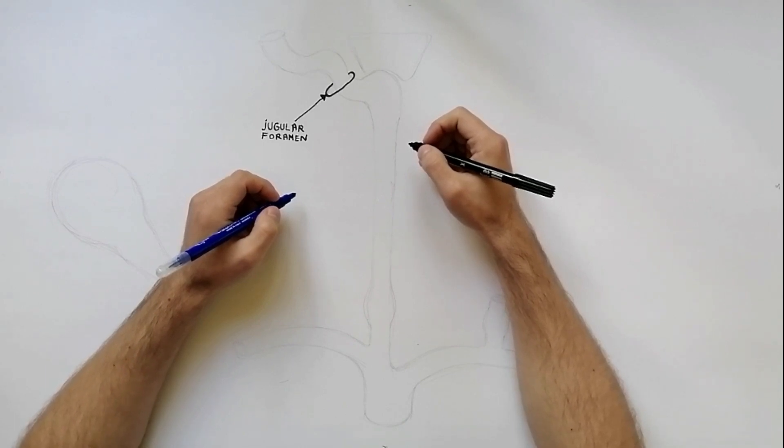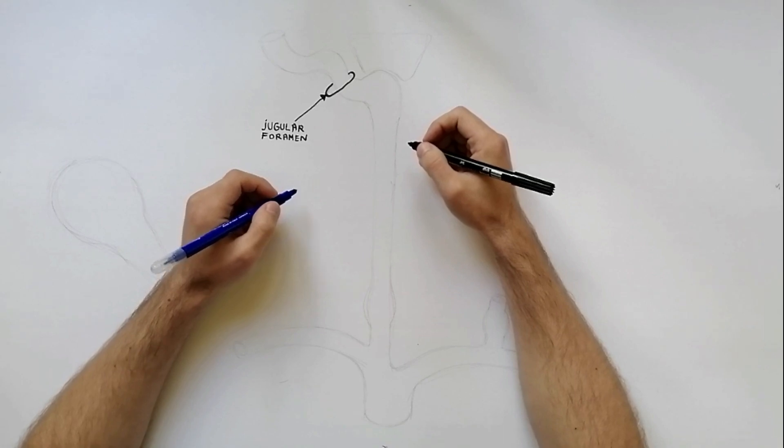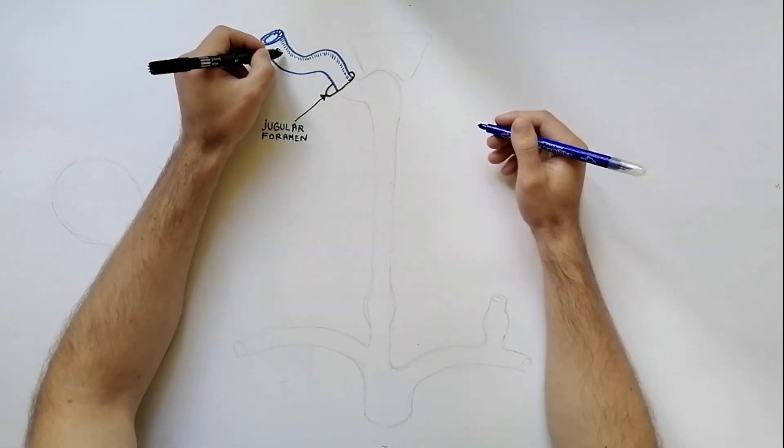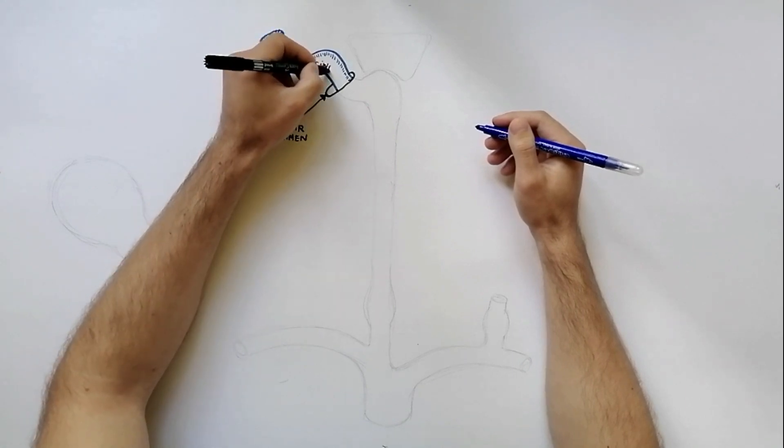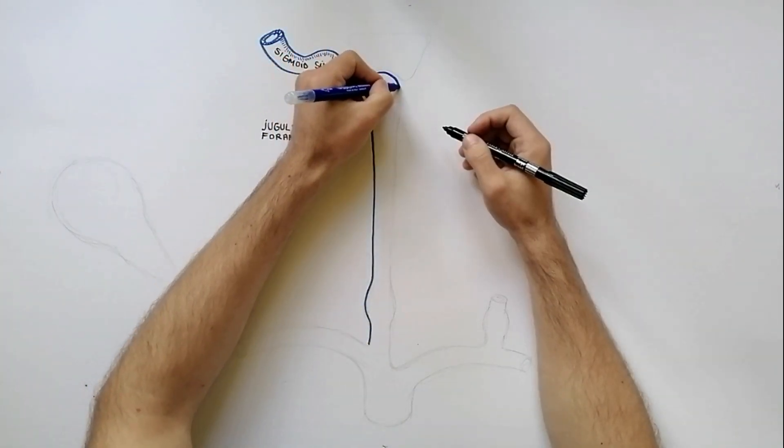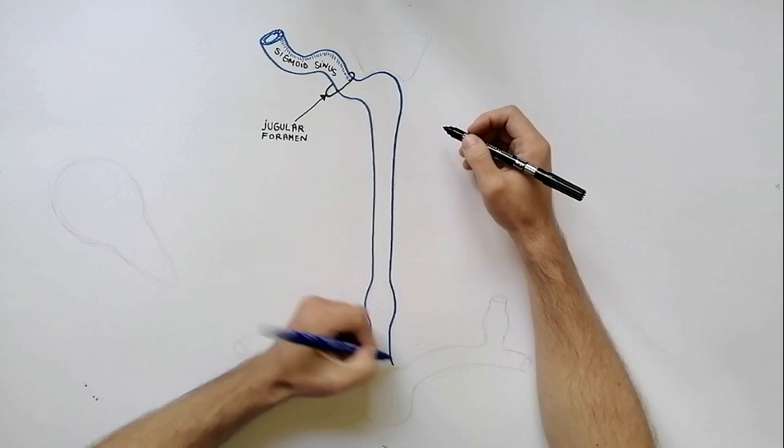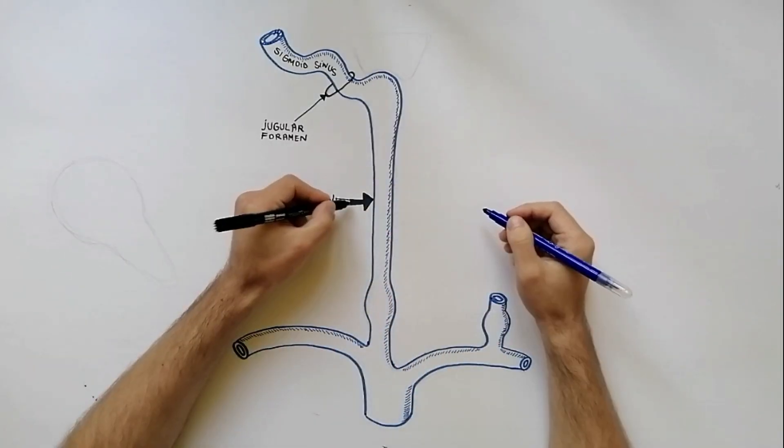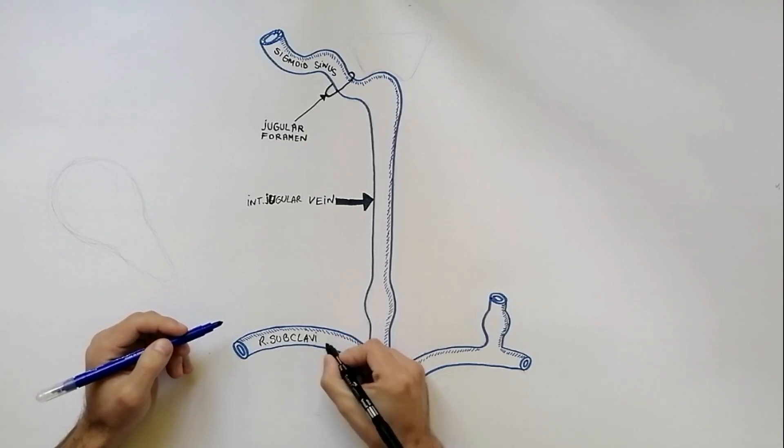The internal jugular vein is a paired vein which is usually the largest vein in the neck. It begins as the direct continuation of the sigmoid sinus at the base of the skull below the jugular foramen and descends vertically downwards to end behind the sternal end of the clavicle by joining the subclavian vein to form